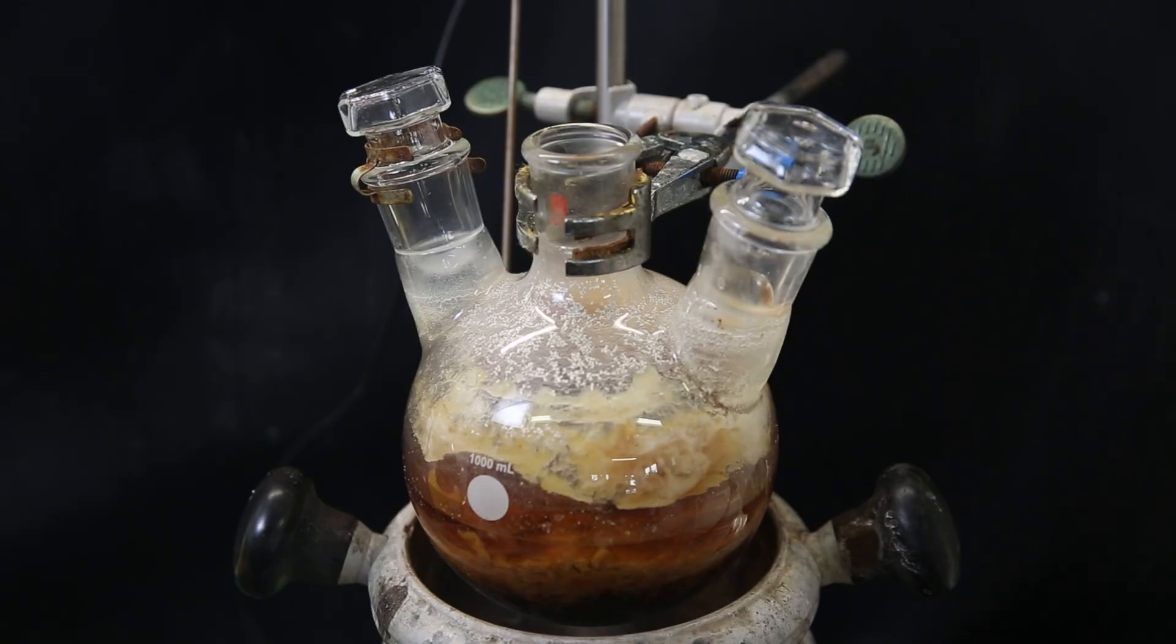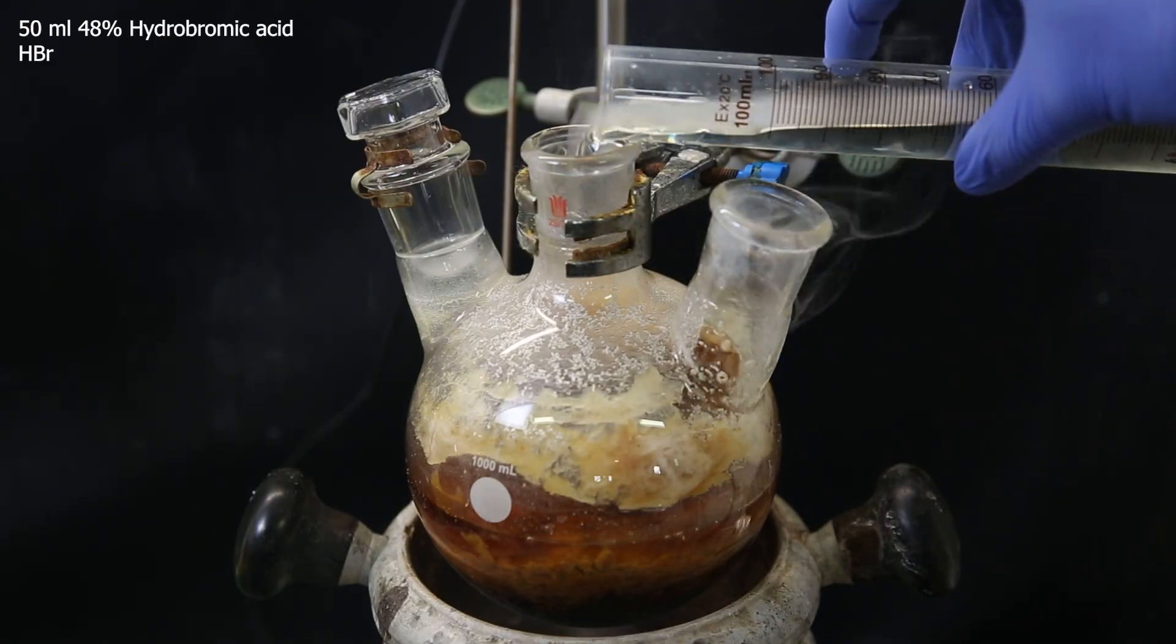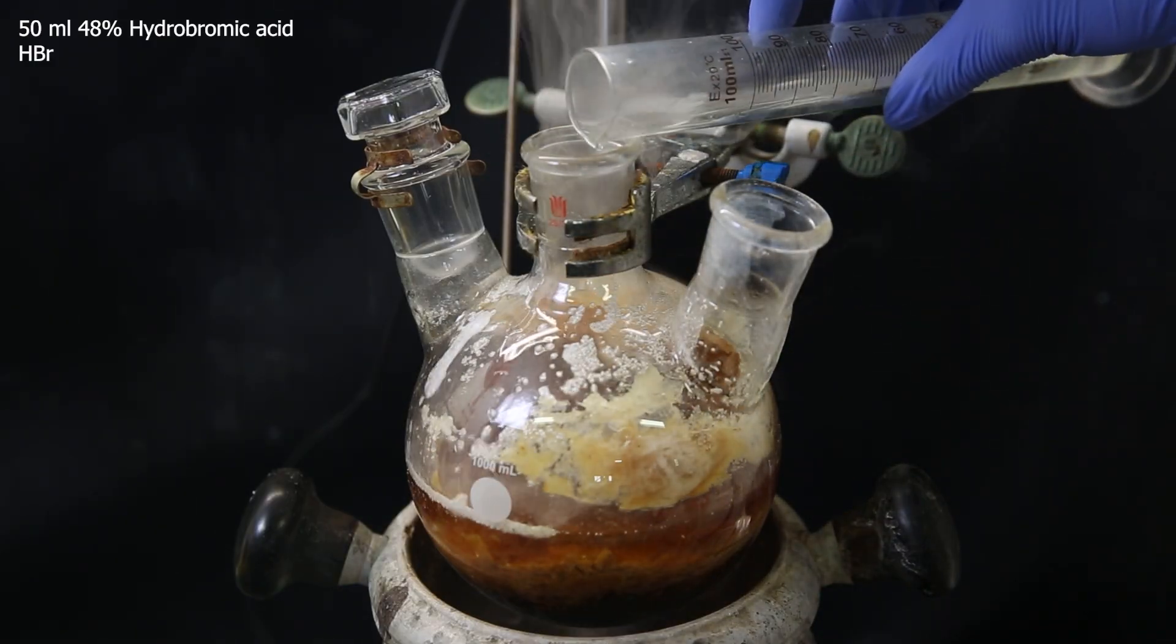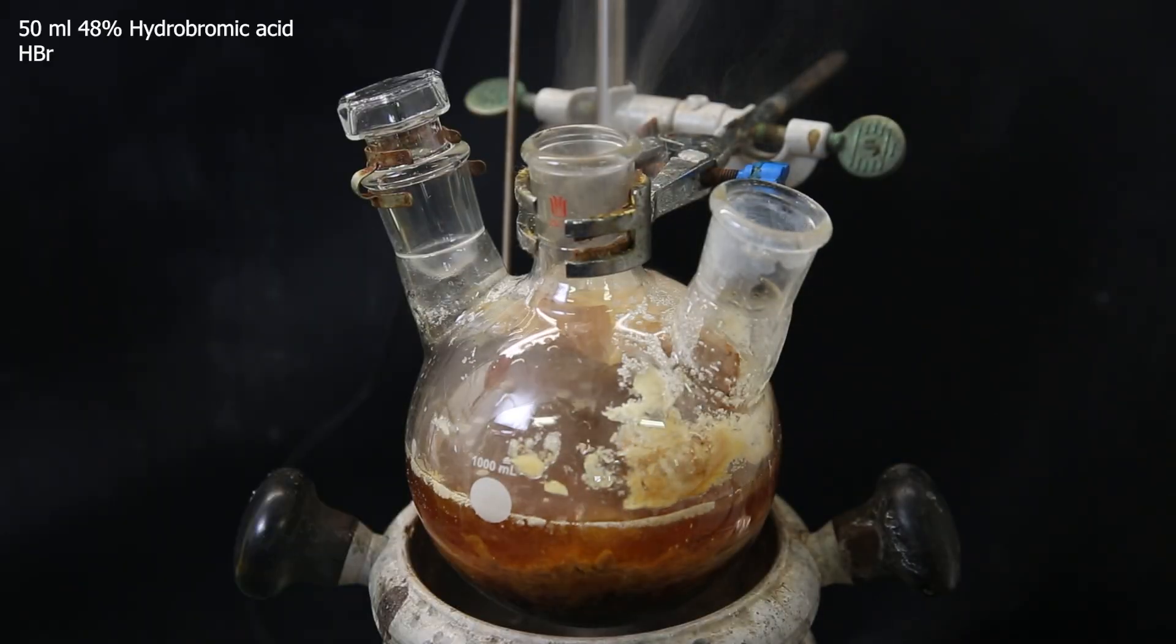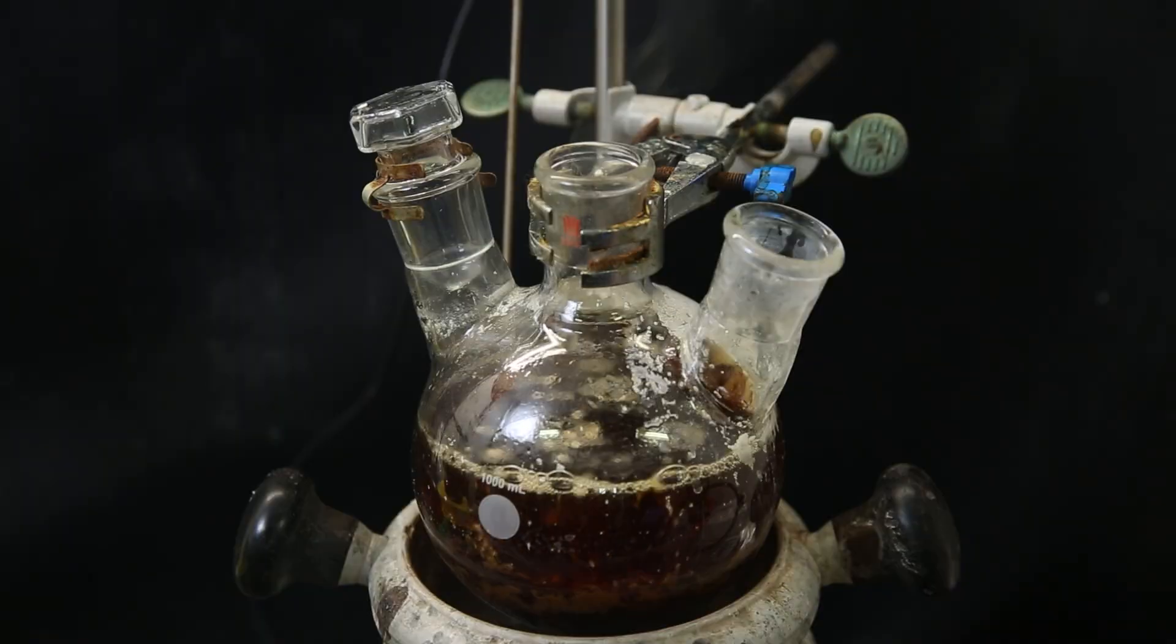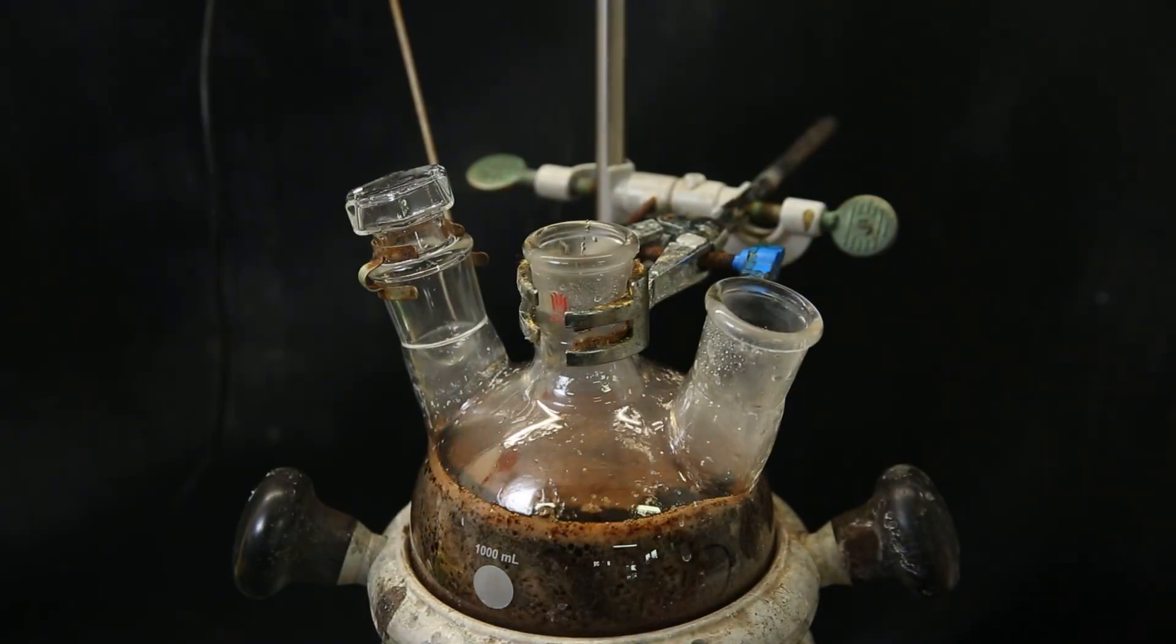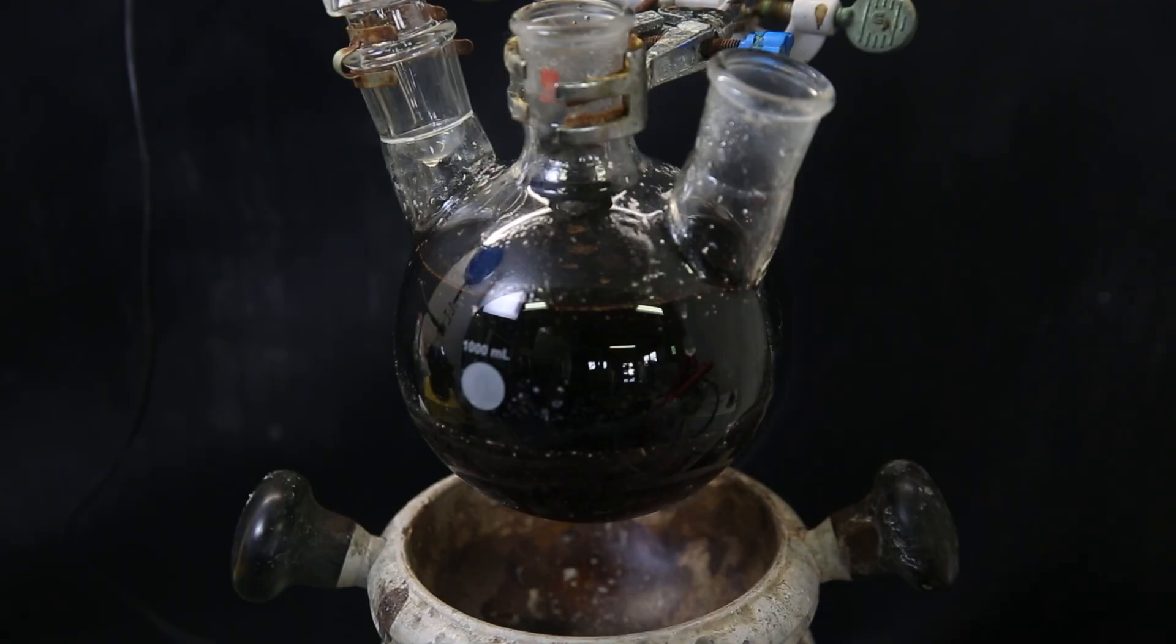When that's done, I hydrolyze all the product, and destroy remaining magnesium by adding 50 ml of 48% hydrobromic acid, and then 100 ml of water to dilute it. I then mix it all around to get it to come loose, and it starts reacting exothermically. When it has all reacted away, except for a little bit of magnesium, I am left with two very dark layers.